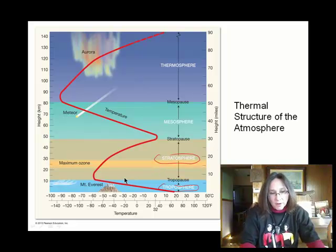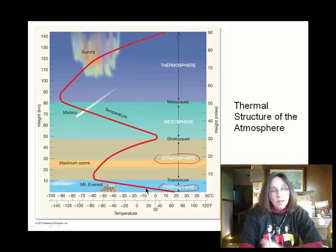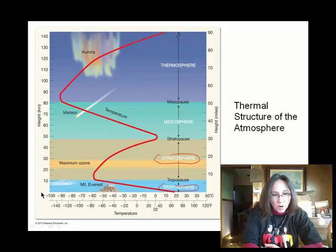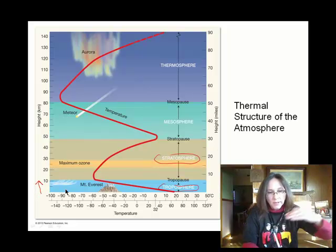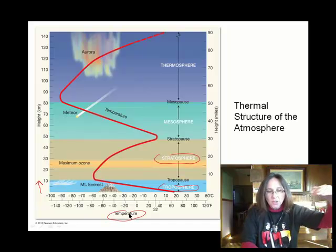This is an important figure because it shows that as you climb a mountain, it's going to get colder. In the troposphere, which is where you are when you climb a mountain, the red line shows you going up in elevation. Along the x-axis, it shows you what the temperature is as you go up in elevation.